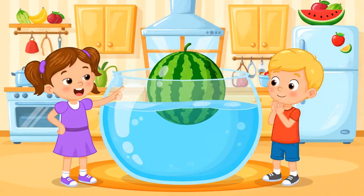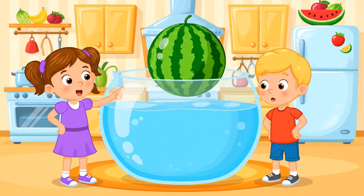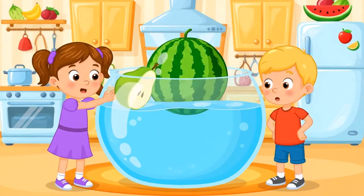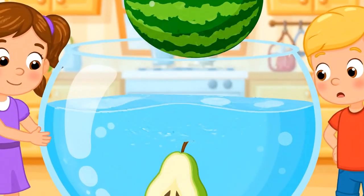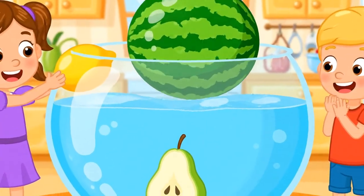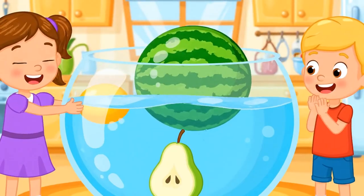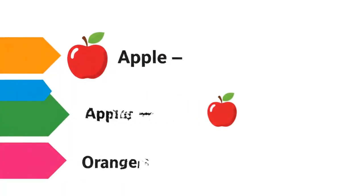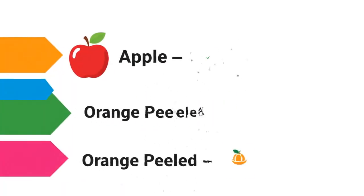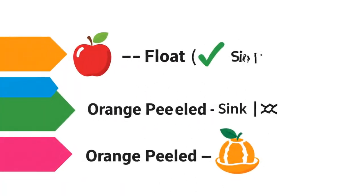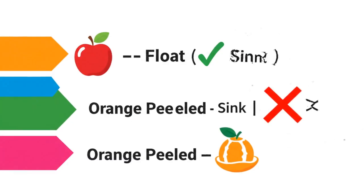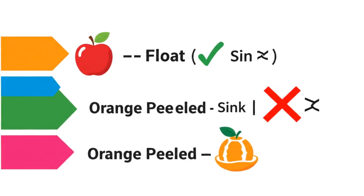Try more fruits at home — watermelon, pear, or lemon — and see what happens. Make a chart. List each fruit, write if it floats or sinks, and compare results.